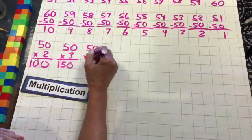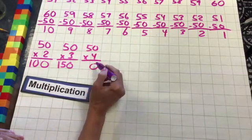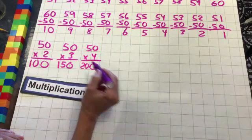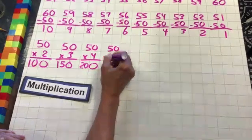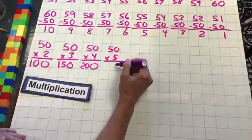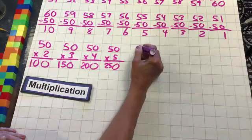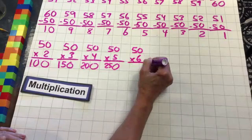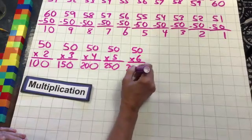Let's do four times 50: four times zero is zero, four times five is 20. 200 is four fifties. 50 times five: five times zero is zero, five times five is 25. 50 times six: six times zero is zero, six times five is 30.